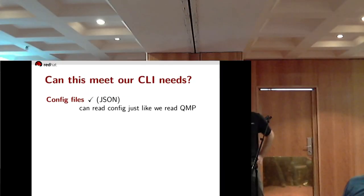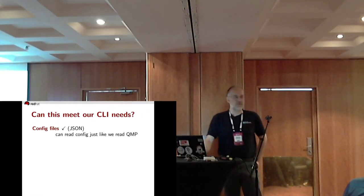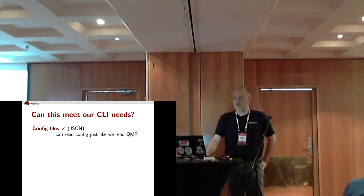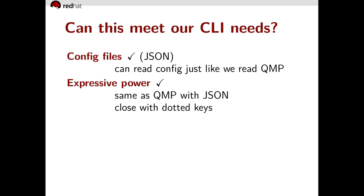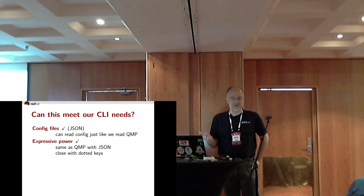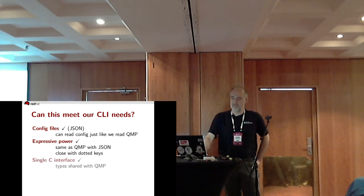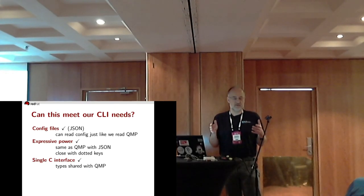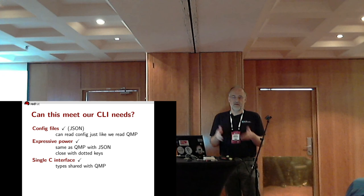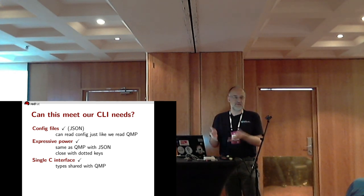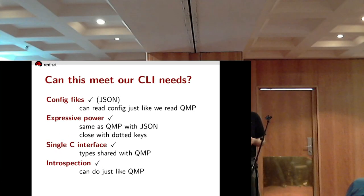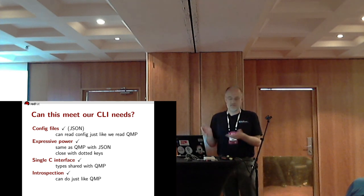So can this design meet our command line needs? Let's check them. Configuration file — yes, we can read JSON from a configuration file just as easily as we can read it from a QMP socket. Expressive power — it's the same as QMP with JSON arguments and pretty close with dotted keys. Driving a single C interface — yes, because now the command line and QMP are similar: they both use the same QAPI schema and the same QAPI types, so there's really no need for conversion. Introspection — yes, we can introspect the command line just like we introspect QMP, using the same mechanisms.